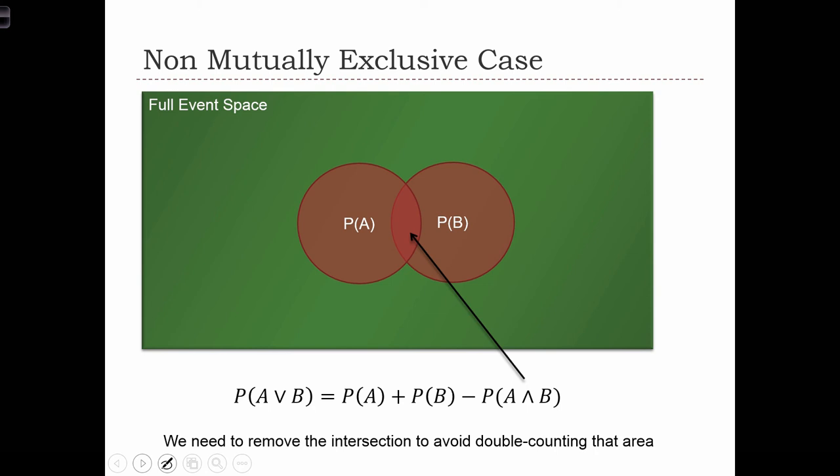What happens when the events are not mutually exclusive? In this case, we've got event A and event B, but some of the outcomes occur in both events simultaneously.